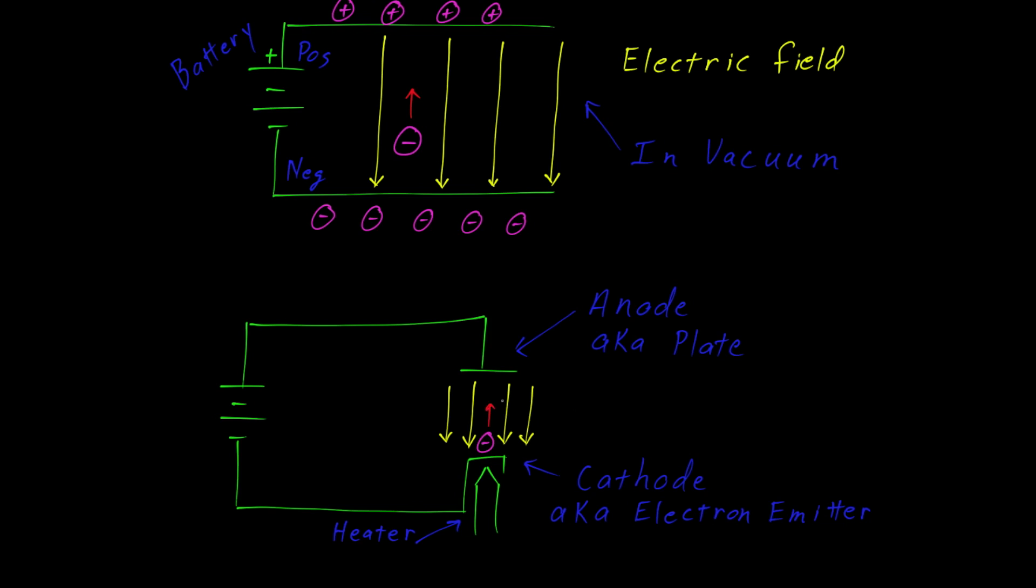And in a vacuum tube, that happens all the time. Because we have the heater, which is heating the cathode, up to red hot. And those electrons are literally boiling away. So a whole bunch of electrons are being accelerated up towards the plate.